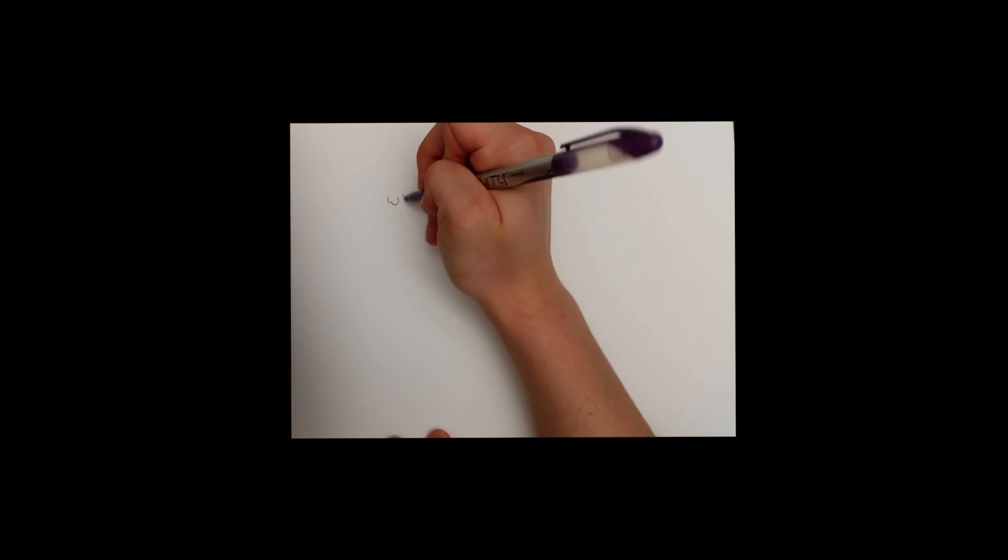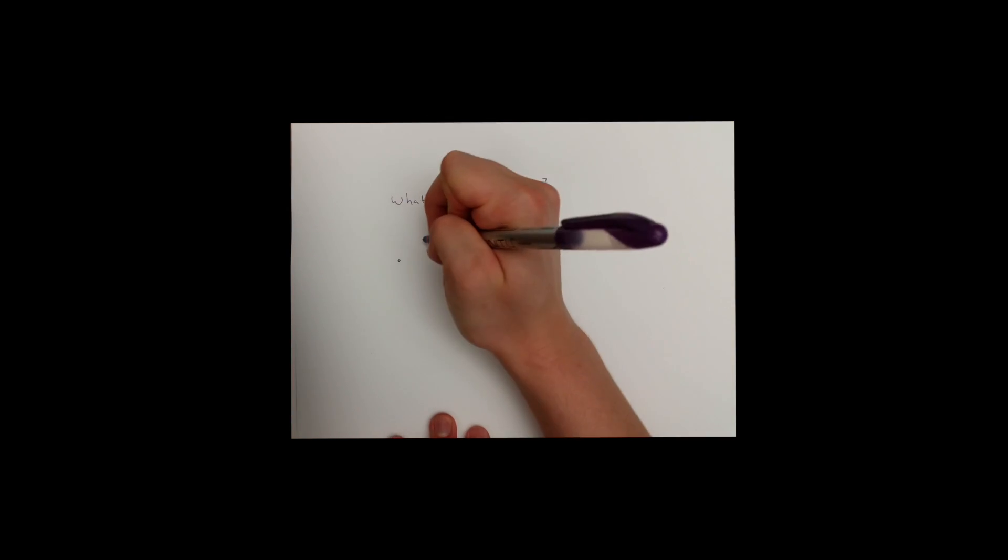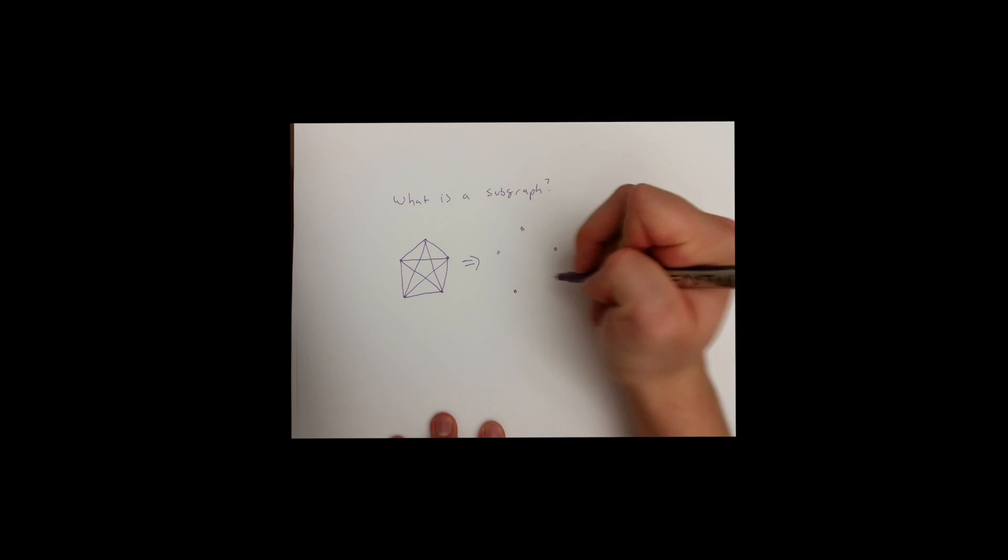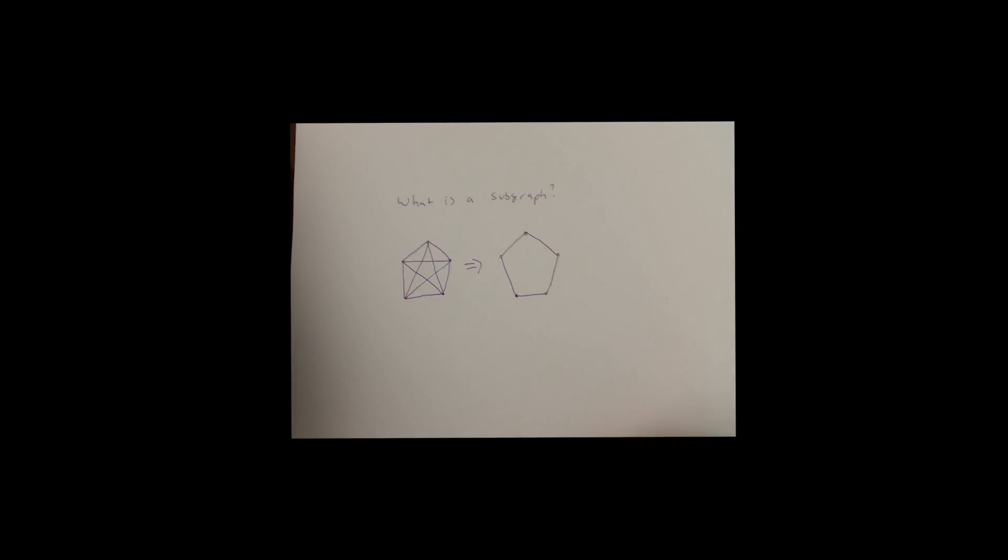A subgraph is a collection of edges and vertices that are in some larger graph. A perfect matching is one example of a subgraph, as is this pentagon, in relation to its original graph of a pentagon surrounding a five-point star.